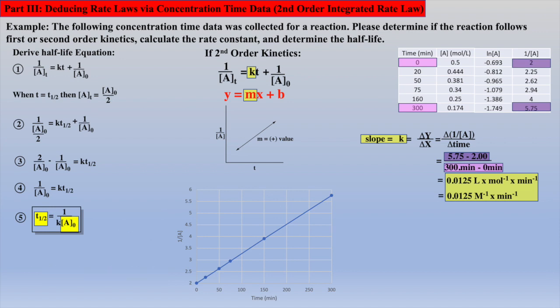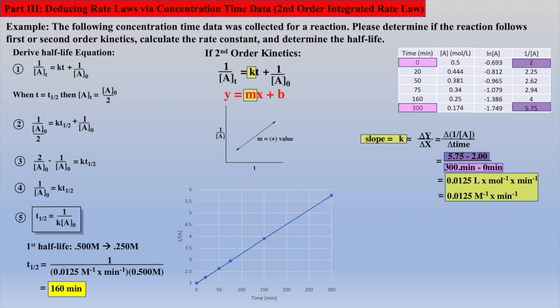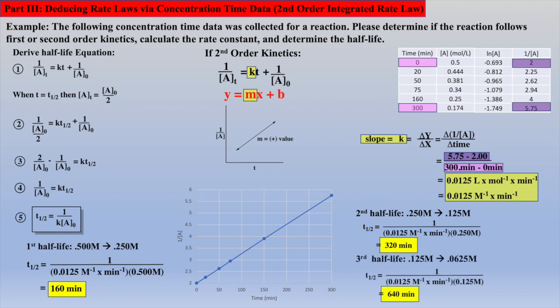Let's explore this by calculating the first half-life by substituting the rate constant and initial concentration into our half-life equation. The result indicates that 160 minutes need to pass for the concentration to go from 0.5 molar to 0.25 molar. Plugging our new concentration of 0.25 molar into the half-life equation affords the second half-life of 320 minutes, which is twice the time of the first half-life. This should make sense because there is less reactant A to react, so it takes twice as long if there is half as much A present. The third half-life is twice the second half-life, and so on.